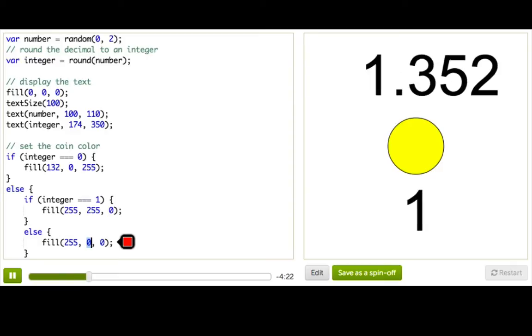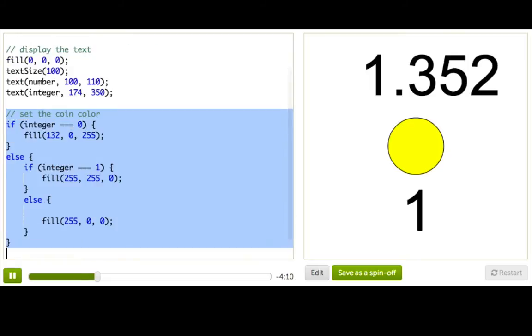So then if I wanted to add more sides to my coin, I could go up here, make this 0 to 3, and then go deeper into this else block and add more if, elses, and so on and so forth until I have a bajillion nested blocks.